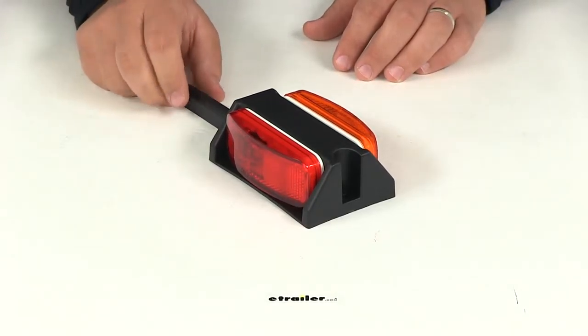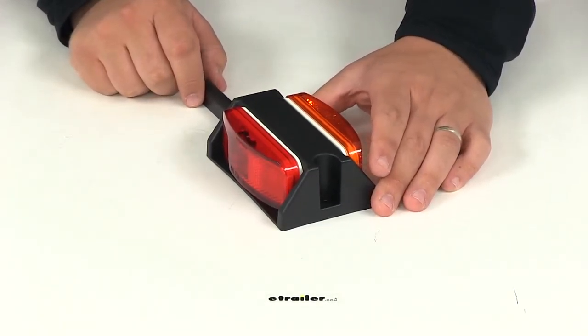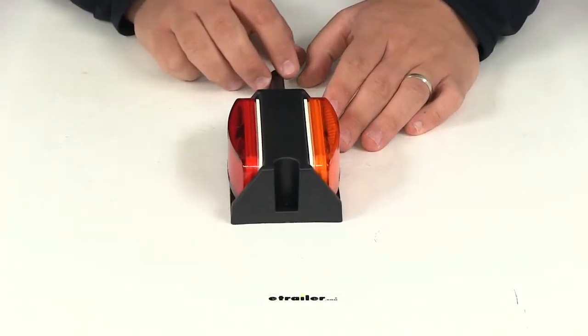Today we're going to be taking a look at part number BA44FNR. This is the right-hand side fender clearance amber and red trailer light from Optronics.